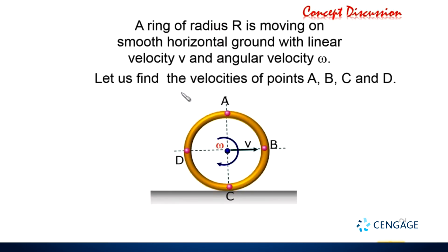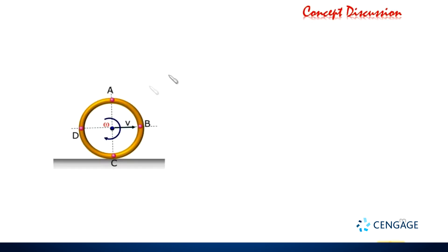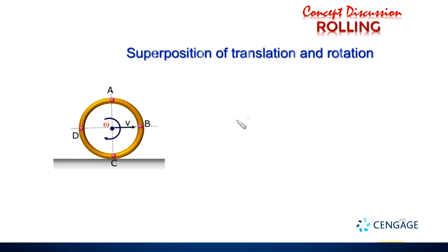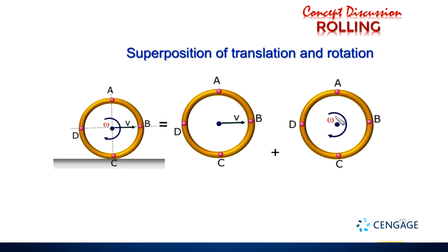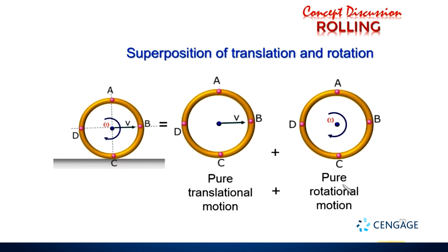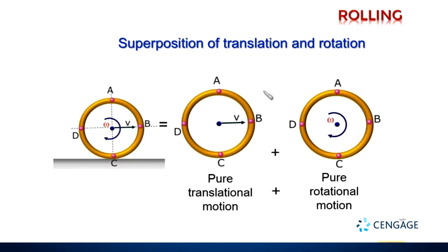We know this is a combination of translation and rotation motion — that is, a superposition of translation and rotation. We can separate them into pure translation motion and pure rotation motion. In pure translation motion, each and every point on the body moves with the same velocity as the centre of mass. So here we can write V, V, V, and V as the velocity of these points, equal to the velocity of the centre of mass.